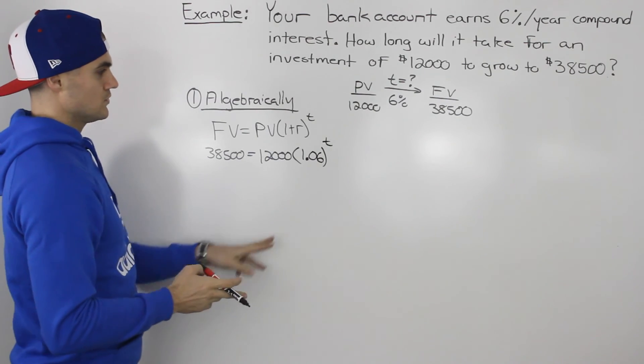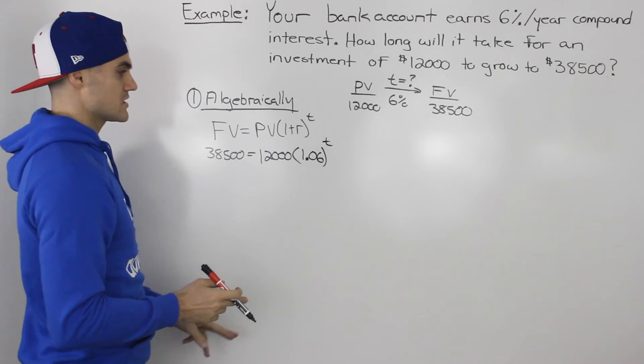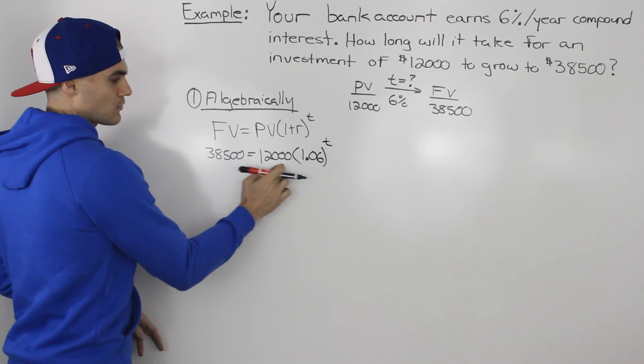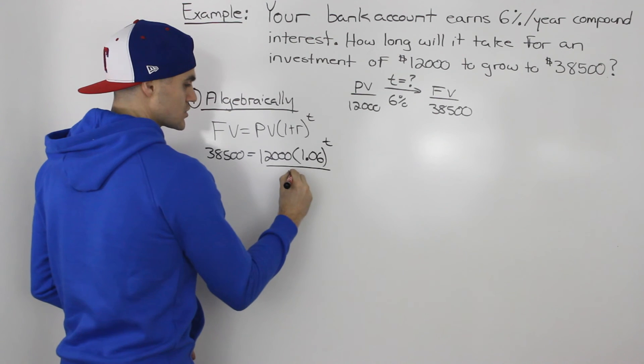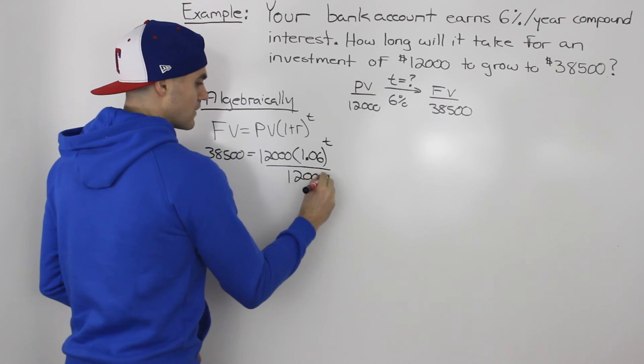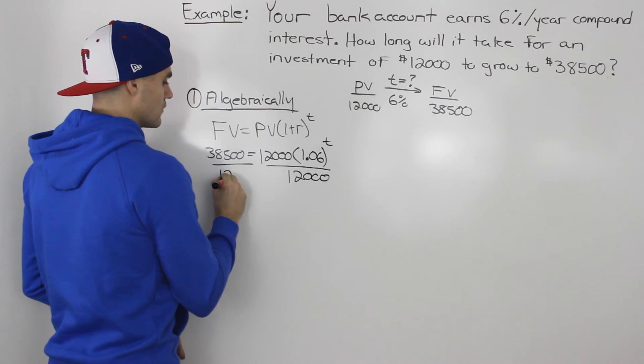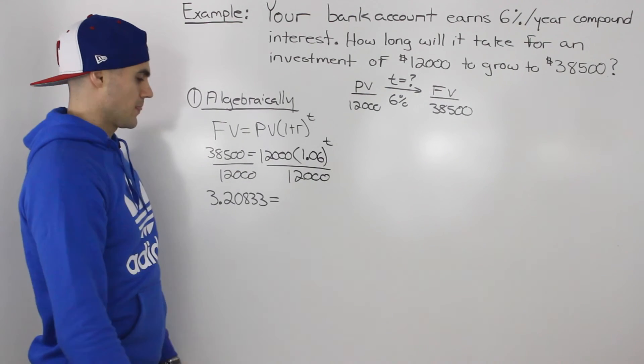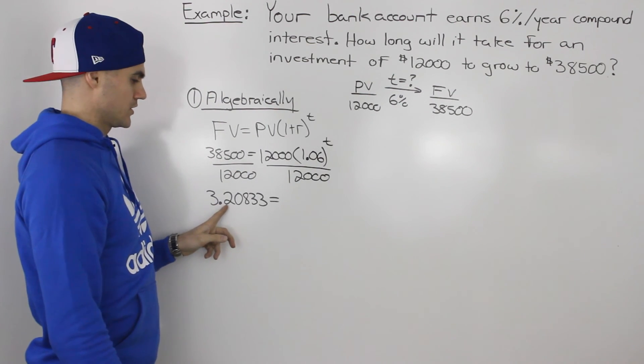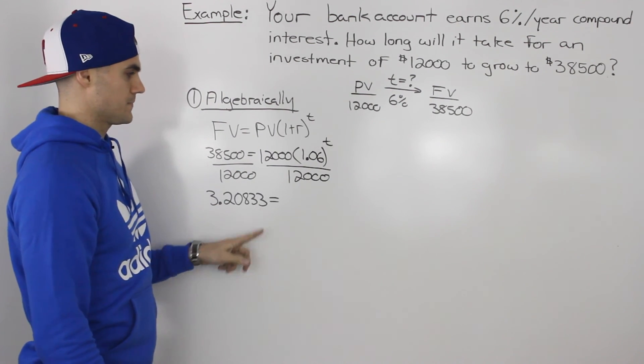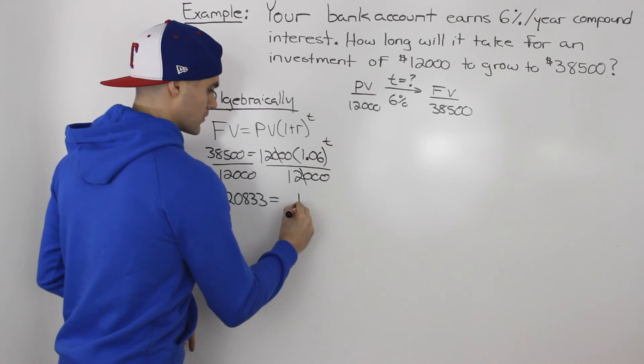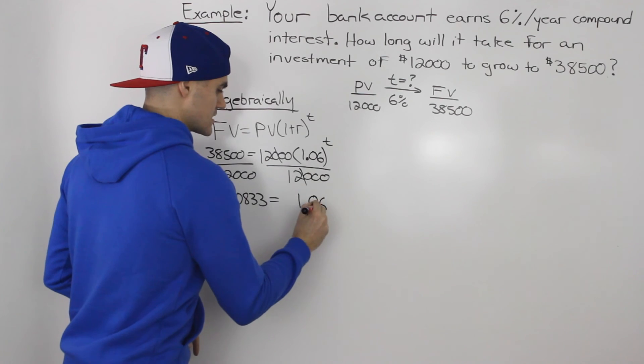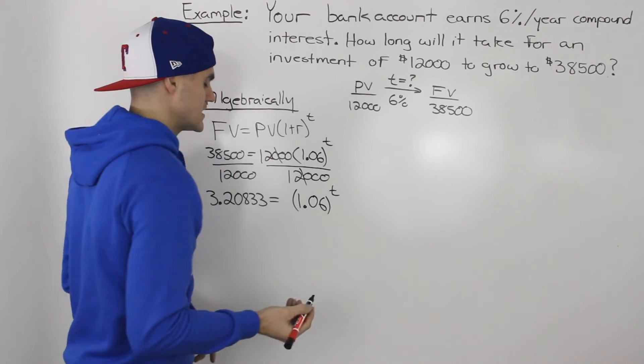So what we have to do is isolate for this variable t. The first thing we do is get rid of this $12,000 in front of this bracket that the t is attached to. So dividing both sides by $12,000. On the left side, we would get 3.20833. And then notice on the right side how the 12,000s cancel out. And we're just left with 1.06 in brackets to the power of t.